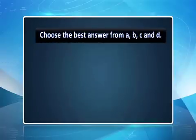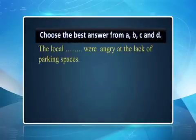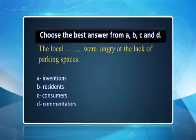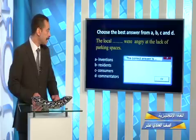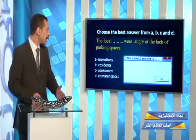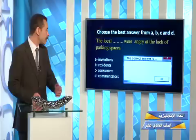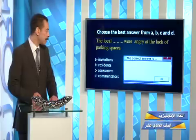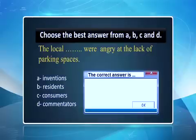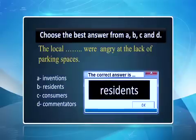Next: the local blank were angry at the lack of parking spaces. We have inventions, residents, consumers, or commentators. The answer is residents — the local residents or inhabitants — that is, people living in a certain place — were angry at the lack of parking spaces.